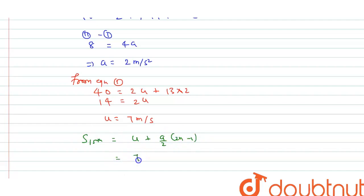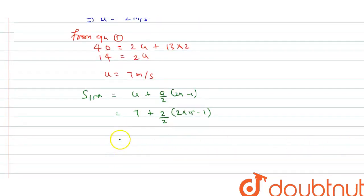Initial velocity is 7. Acceleration is 2 divided by 2. 2 into 15 minus 1. So this is equals to 7 plus 30 minus 1, 29. So this is equals to 36 meters.